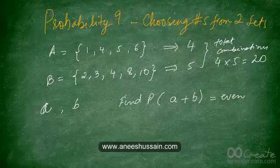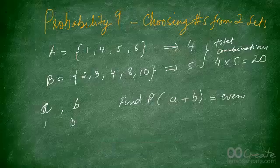Now think about what combinations from set A and set B will add to give even numbers. If you chose 1 from set A, which is odd, you need another odd number from set B. So 1 and 3 is the only possibility with 1. Similarly, if you choose 5 from set A, the only combination that works is choosing a 3 from set B. That's one combination from each.